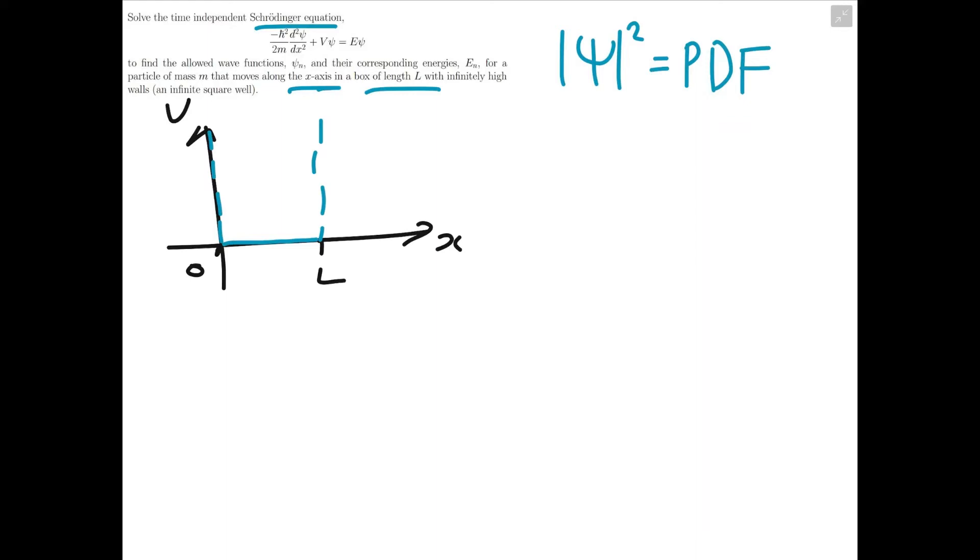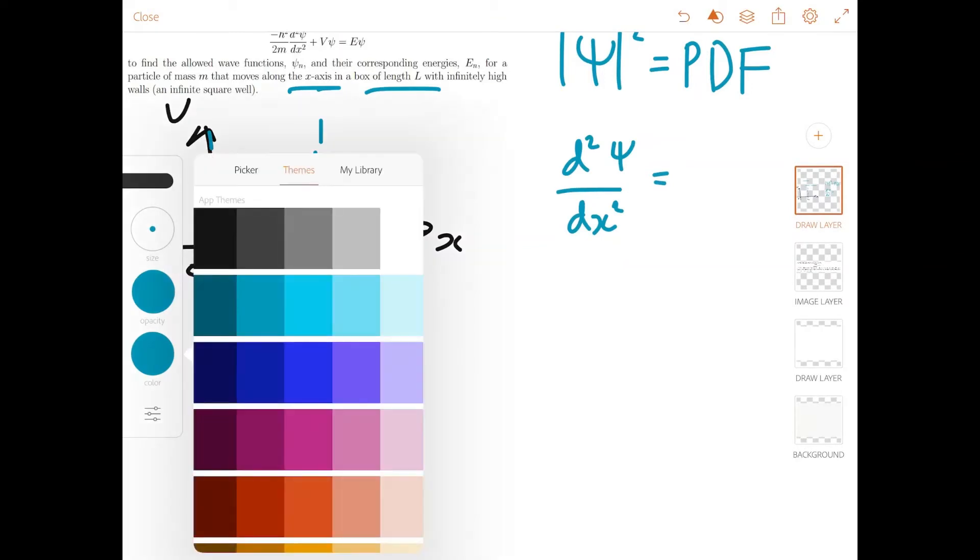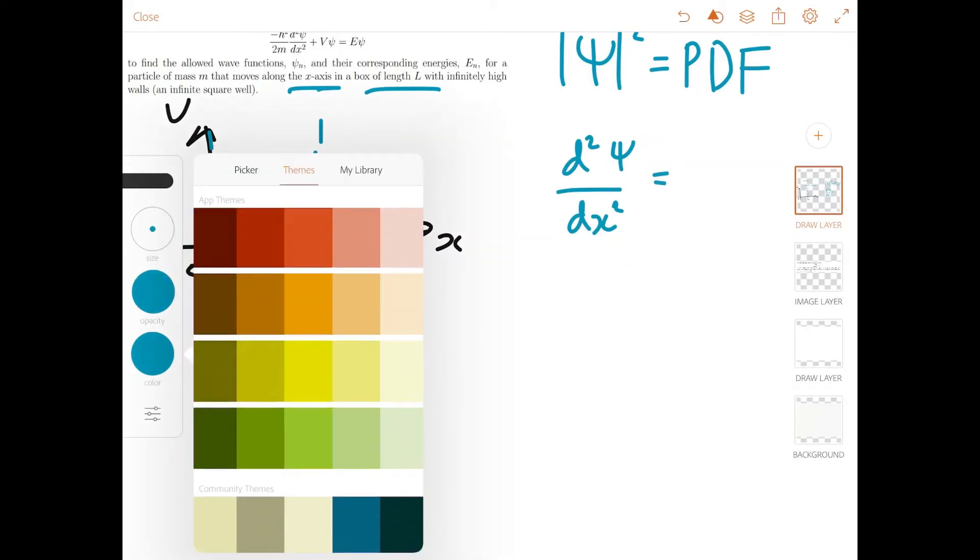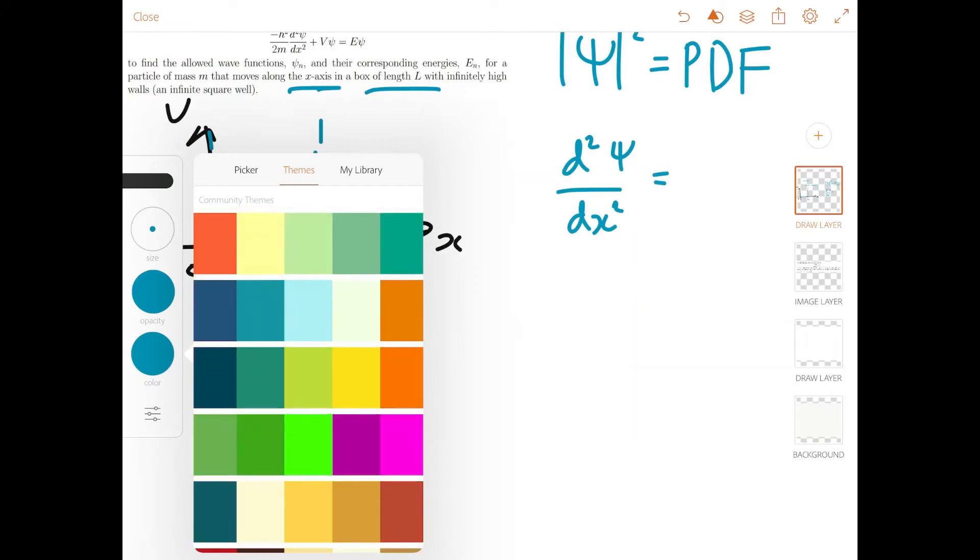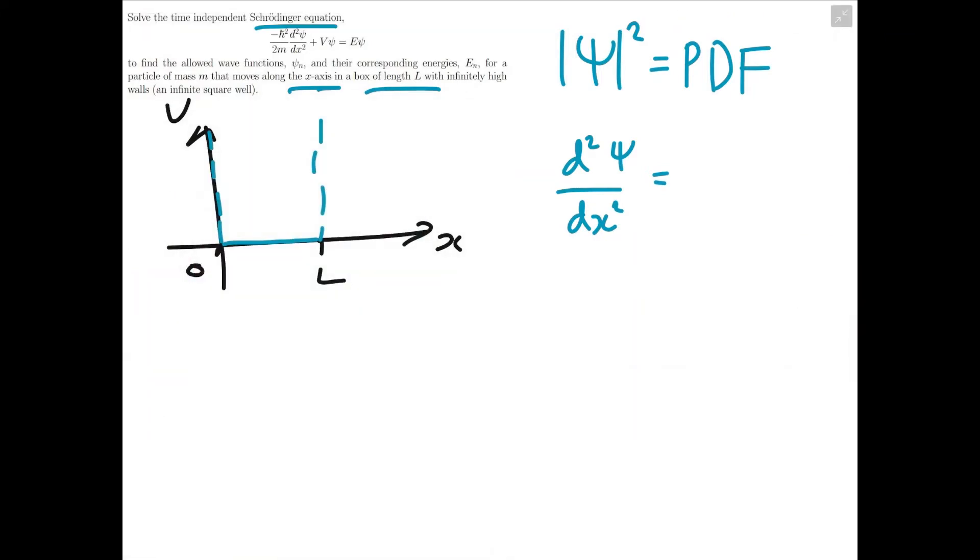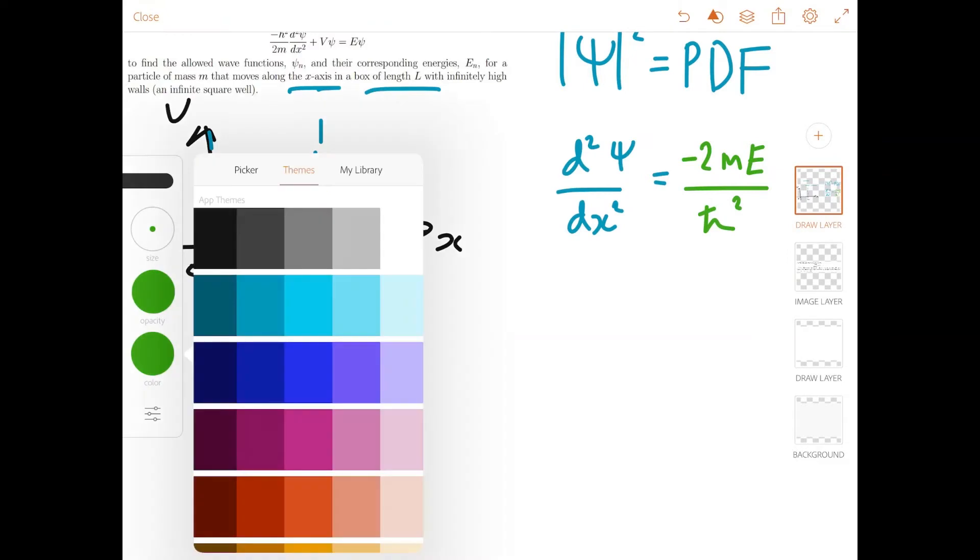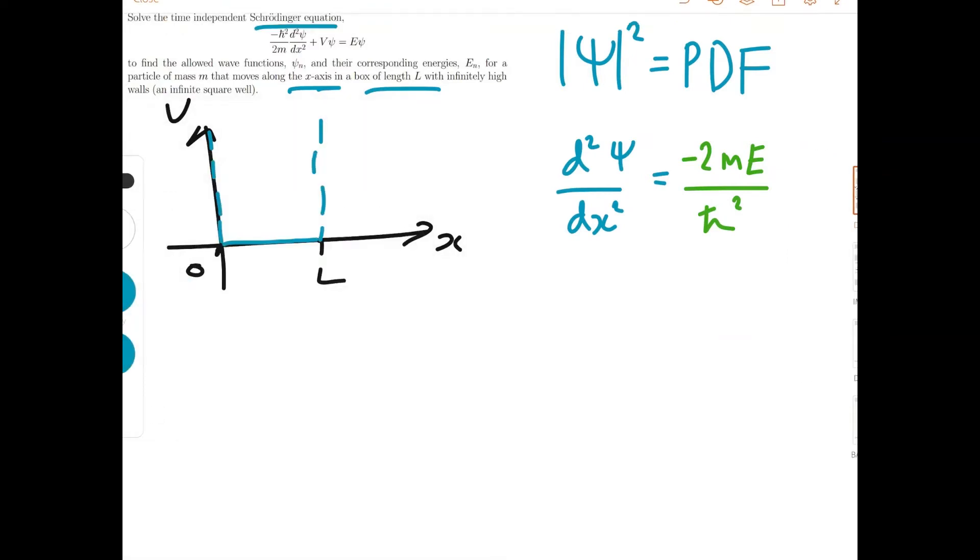So because we've set V to zero, we can actually tidy up the differential equation a bit. So we can write it down as the second derivative of ψ with respect to x is equal to minus 2mE over ℏ² times ψ, because V is zero.